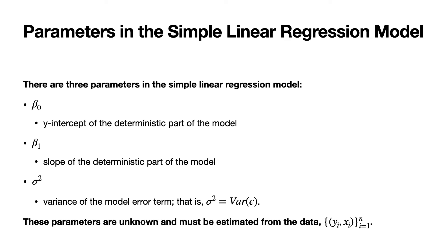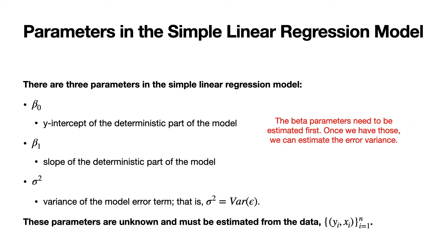We have three parameters in the simple linear regression model: the two beta parameters — beta zero, which is the y-intercept of the deterministic part of the model, and beta one, which is the slope of the deterministic part of the model — as well as the variance of the model error term, sigma squared. The beta parameters need to be estimated first, and once we've done that, then we can estimate the error variance. Our focus in this lecture is on how to estimate the two beta parameters.